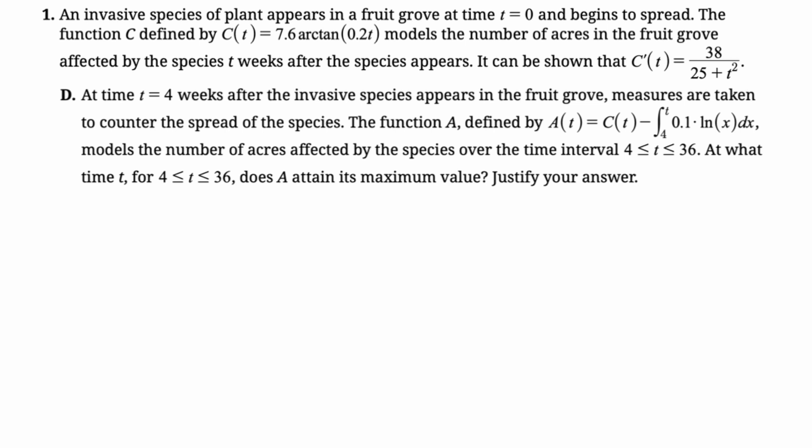models the number of acres affected by the species over the time interval from 4 to 36. At what time between 4 and 36 does A attain its maximum value? This is an absolute maximum question. I'm going to use the candidates test, but I'm also going to write up the solution using the lonely critical point theorem.